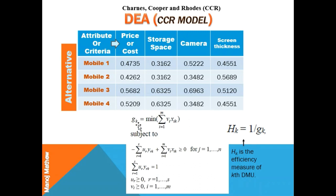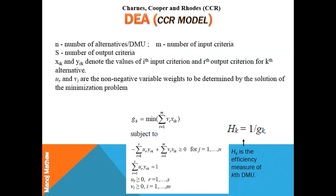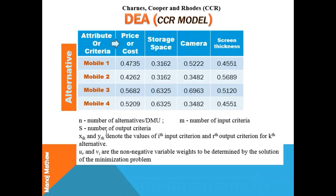In this example, I have taken a minimization of the input criteria. We calculate HK, which is the efficiency measure of the Kth DMU. Let us look at the nomenclature of the linear programming model. You can pause the video and write the formula so that you can use it while formulating the problem. Here, n is the number of alternatives — in this example we have four alternatives, so n equals four. m is the number of input criteria — here there is only one input criteria, that is price, so m equals one.